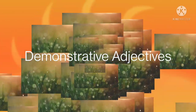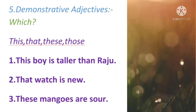Next, demonstrative adjectives. Demonstrative adjectives describe about the nouns — like this, that, these, those. This boy is taller than Raju — which boy is taller than Raju? This boy — it points out the noun. That watch is new — which watch is new? That watch. These mangoes are sour — which mangoes? These mangoes. So this, that, these, those are the demonstrative adjectives.